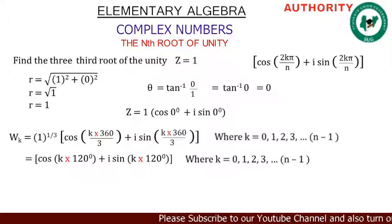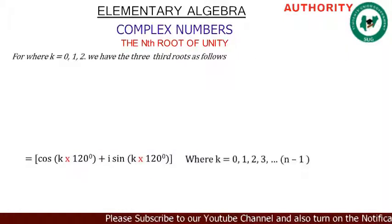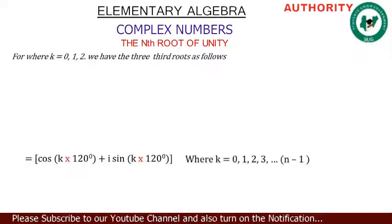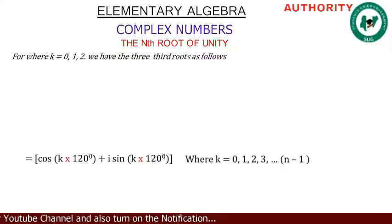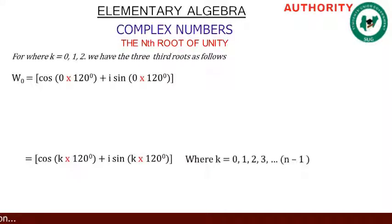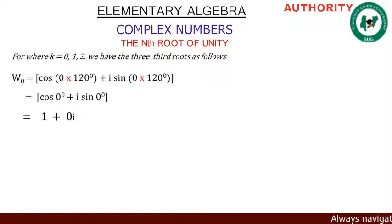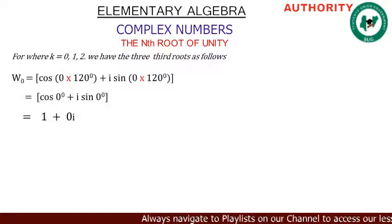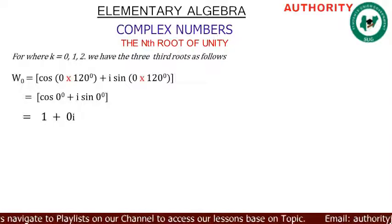We find the three cube roots as follows. For k = 0: w₀ = cos(0×120°) + i·sin(0×120°) = cos(0°) + i·sin(0°) = 1 + 0i, which is simply 1.